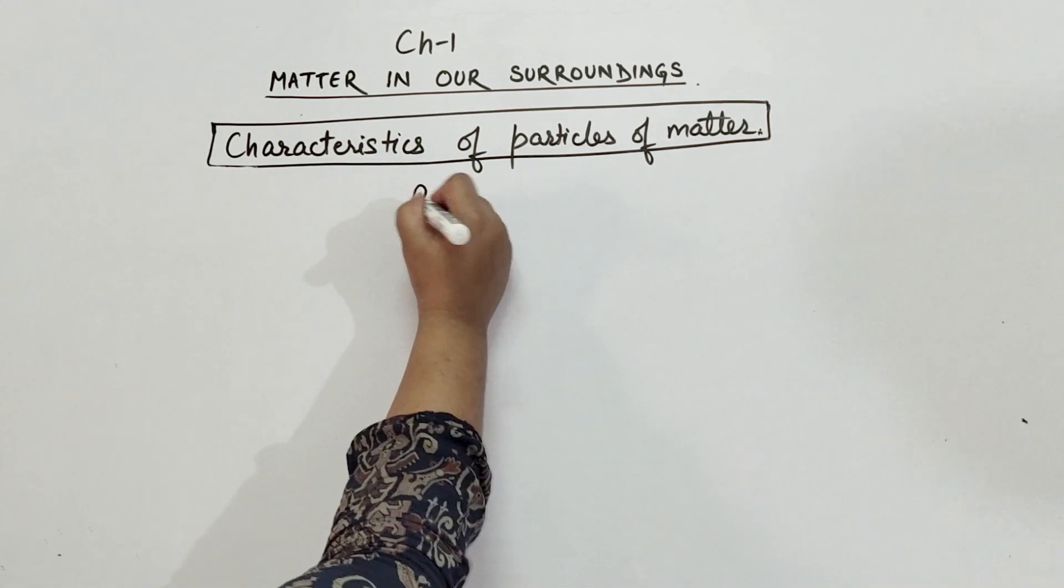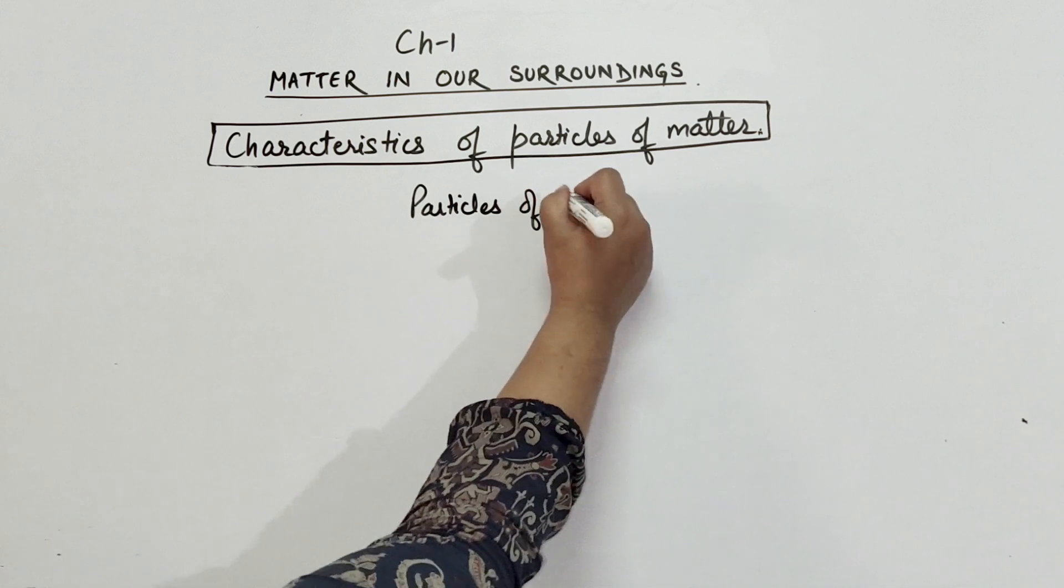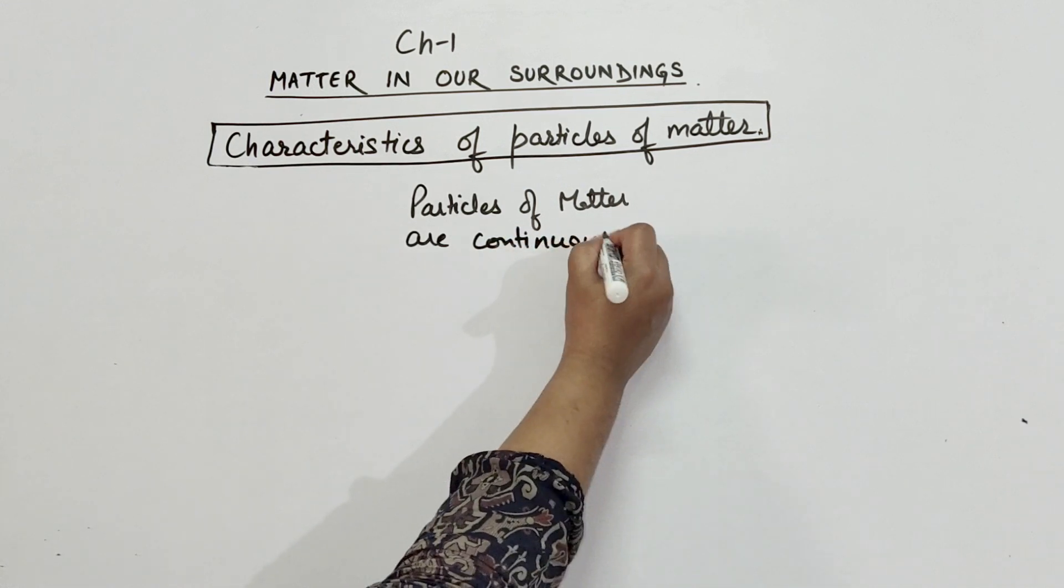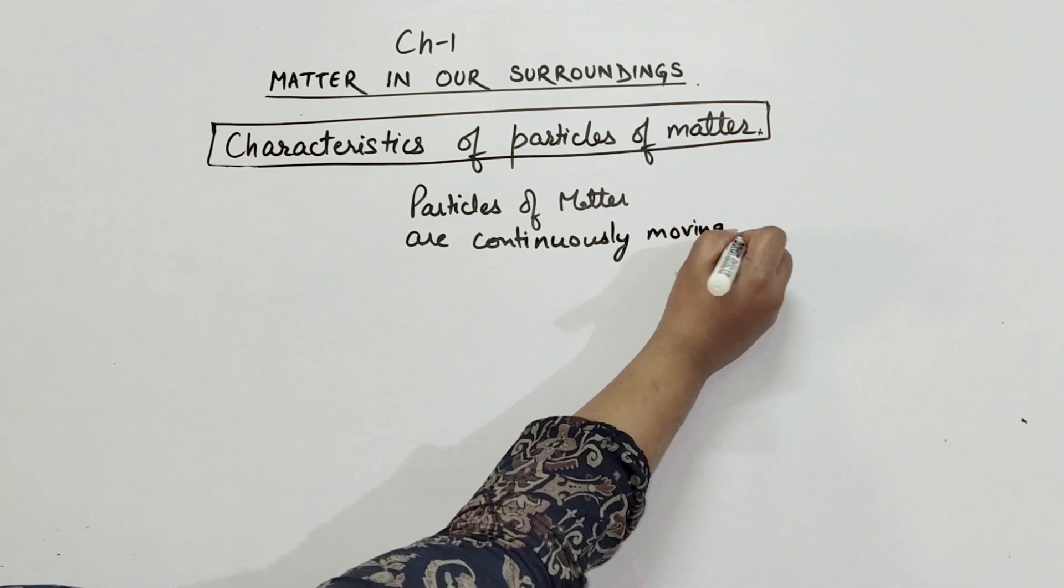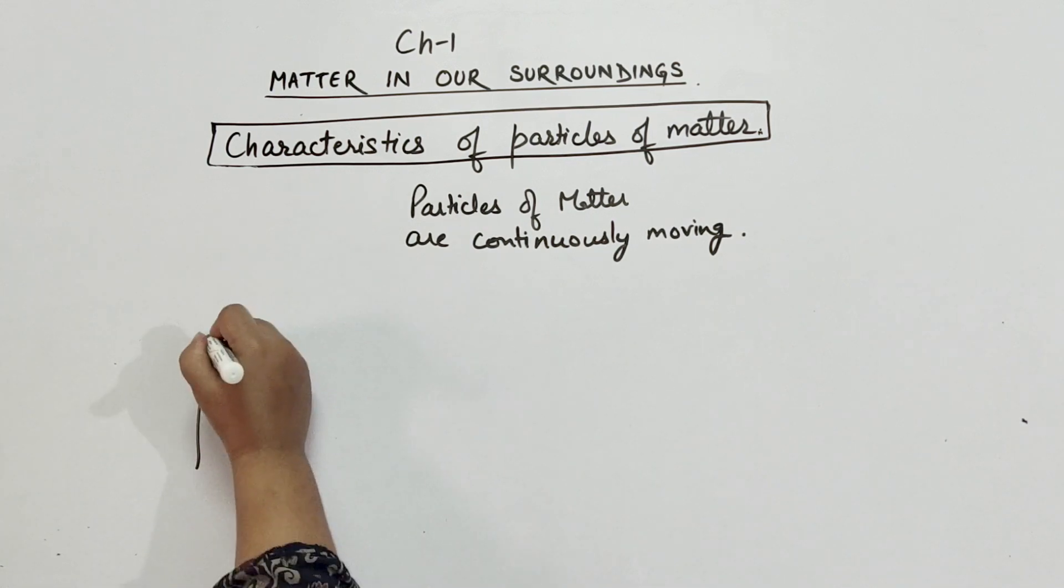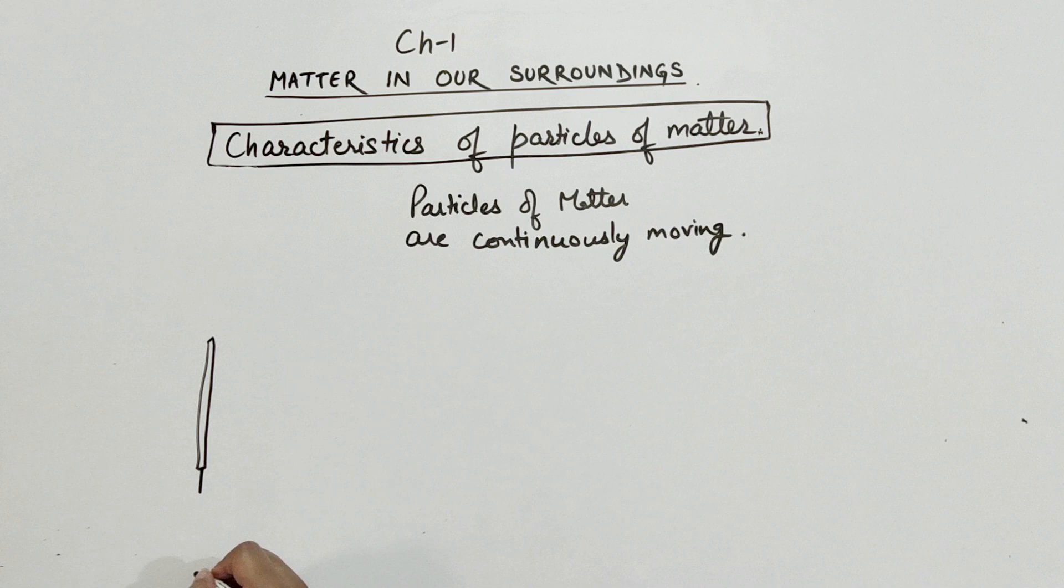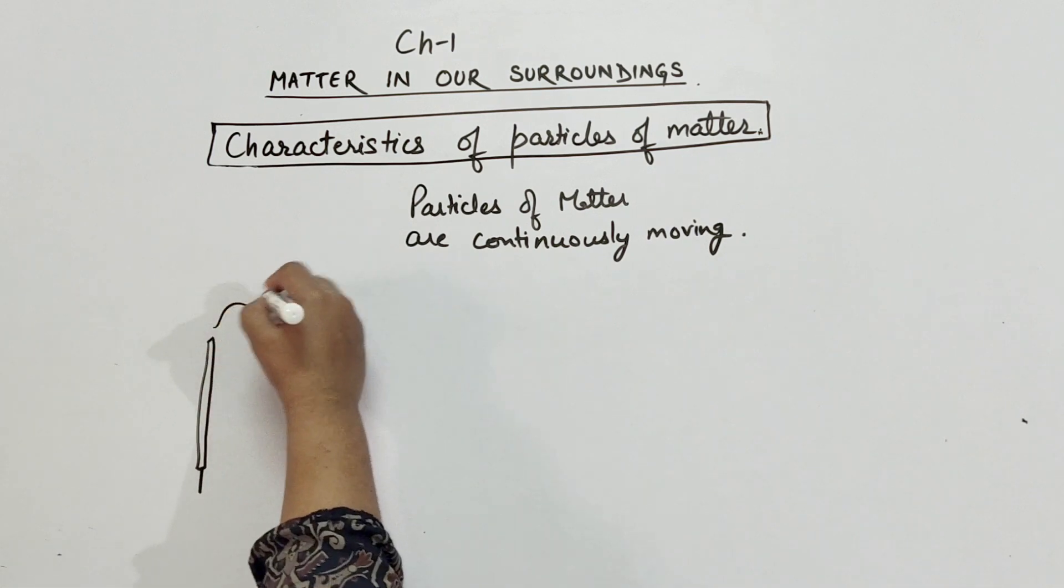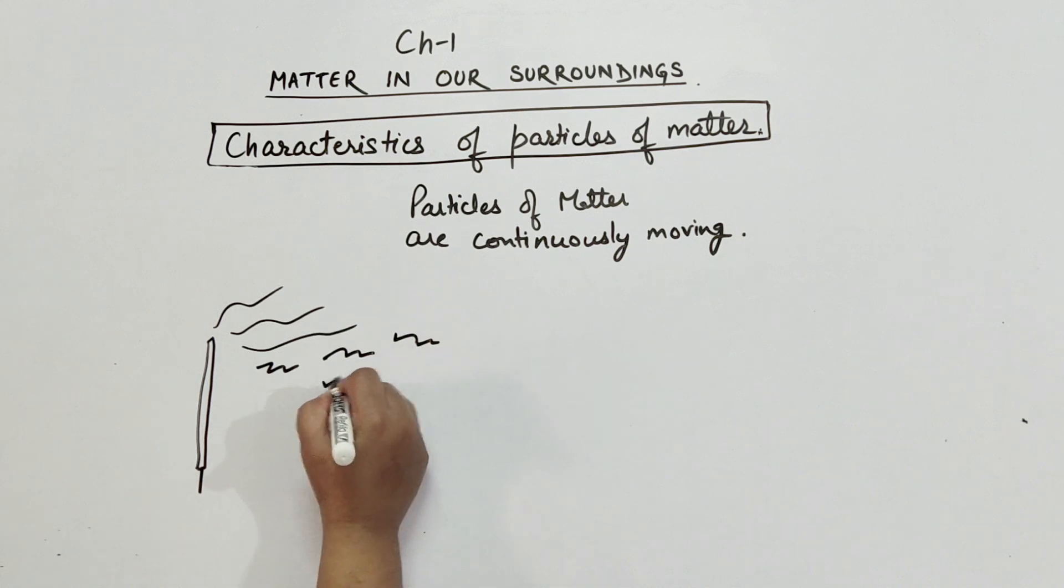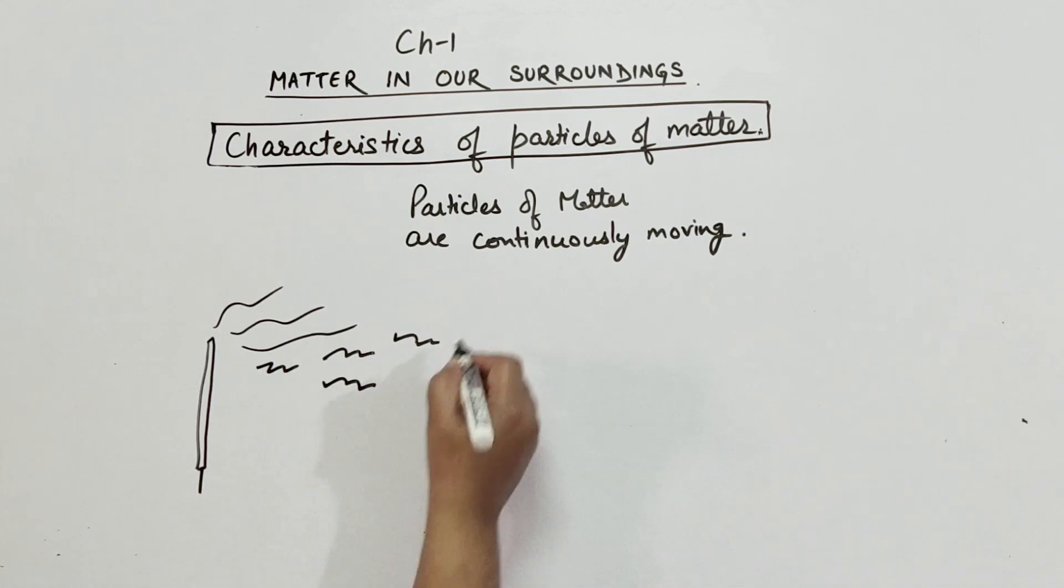The second property is that particles of matter are continuously moving. Let's understand with an activity. Take an incense stick and place it in a corner of your room. Now light the incense stick. Do you get the smell sitting at a distance? Of course yes. This is due to the fact that particles of matter are continuously moving as they possess kinetic energy.